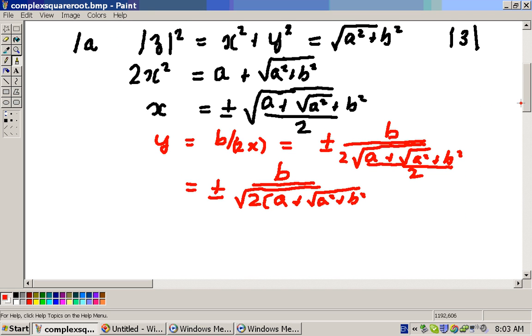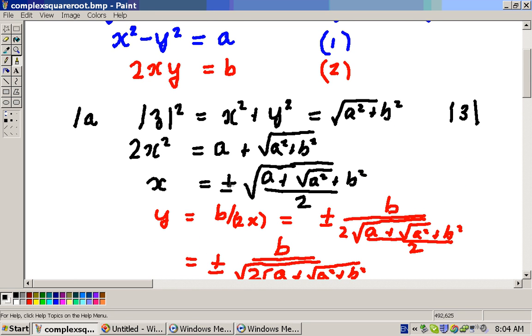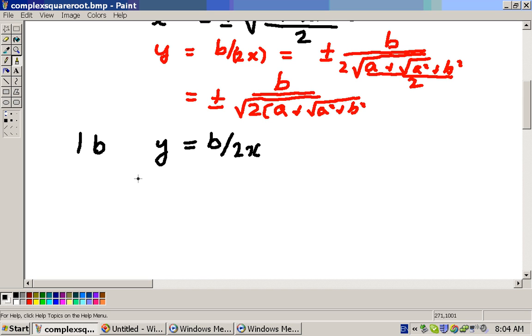Method 1B doesn't use this equation here, so we get that. What it does is it uses this equation here, y = b/2x, and we put that into equation 1 here. So we replace y by that, so when we do that, we will get x² - y², which will be b²/4x² - a. We shift the a across, equals 0.